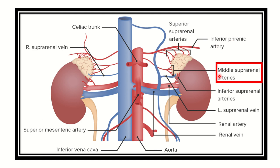Then we can see this is the middle suprarenal artery, and this middle suprarenal artery originates from the abdominal aorta. Inferiorly, here we can see the inferior suprarenal artery, and this inferior suprarenal artery arises from the renal artery.